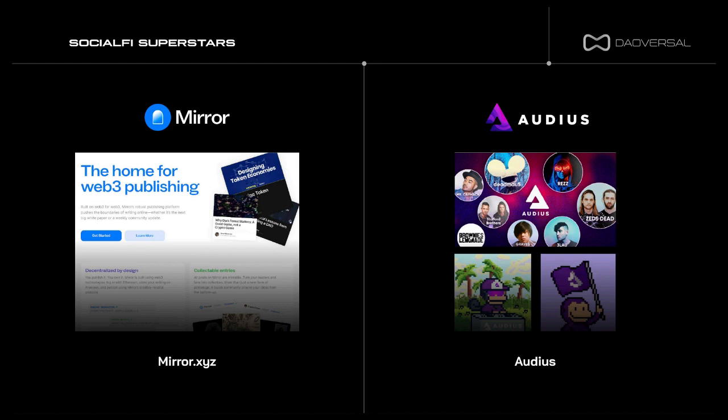Next, we have Audius — a decentralized music streaming platform. It allows publishing and listening to music without a subscription fee. Audius uses a global network of content nodes instead of a centralized service. Artists on Audius retain their full revenue — no deductions are made. Music curators receive 90% of their revenue in the platform's native cryptocurrency, the Audius token. The remaining 10% of the revenue goes to stakers supporting the Audius network.